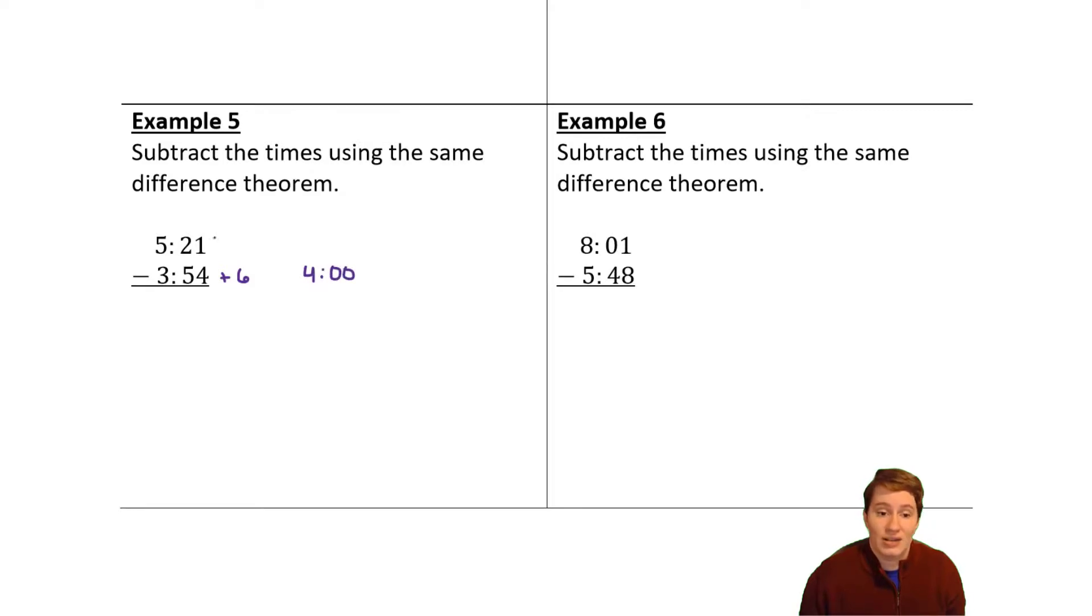We're allowed to do that if we also add six minutes to the first one. So that would change that to 5:27. This is a much easier subtraction problem. So 27 minus zero is 27. Five minus four is one. So that's our answer.